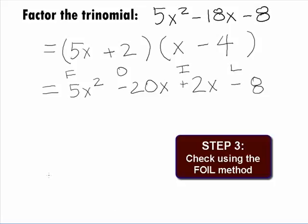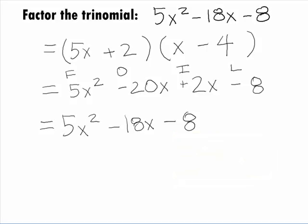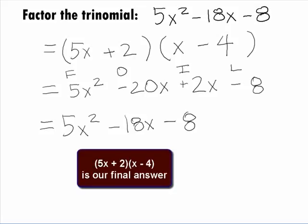When we combine our like terms on this, we end up with 5x squared minus 18x minus 8. Hey, this is our original trinomial, so we do not need to look any further. Our final answer is 5x plus 2 times x minus 4.